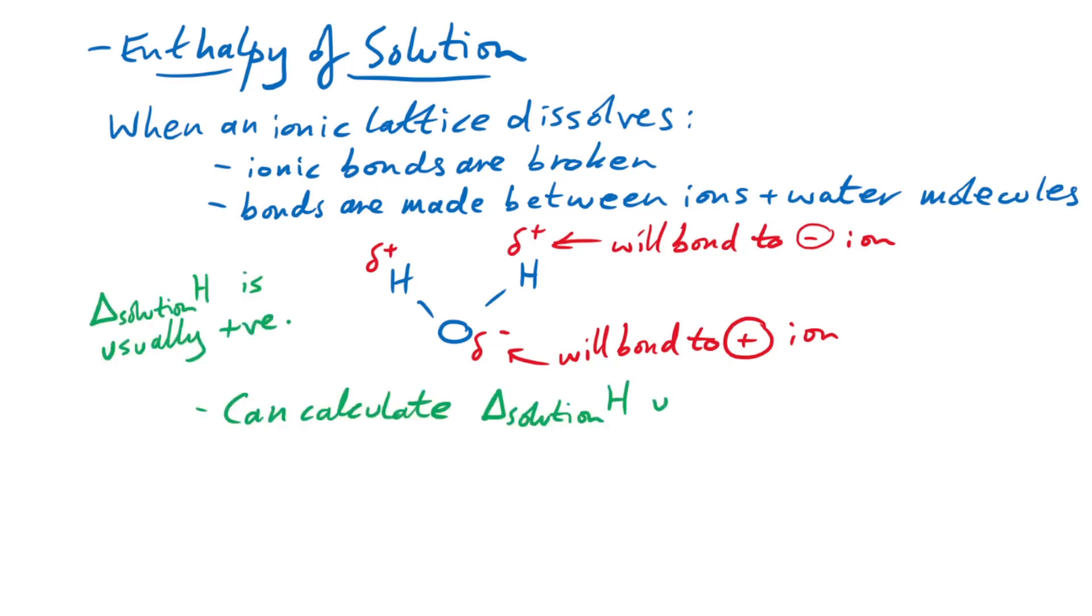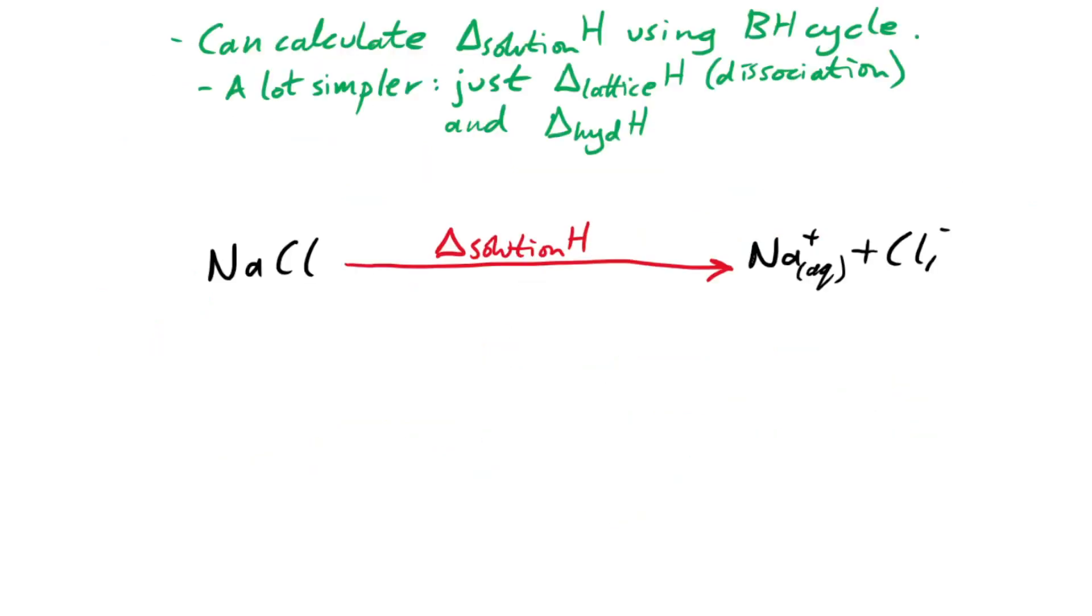Now we can calculate the enthalpy change of solution using a Born-Haber cycle again, but it's a lot simpler. Because we said there's two steps here, didn't we? Let's take sodium chloride again. Firstly, like we saw earlier, we can have our lattice enthalpy change. That's going to be of dissociation if we're turning it into our ions. And then to make them aqueous, well, that's going to be our enthalpy change of hydration.